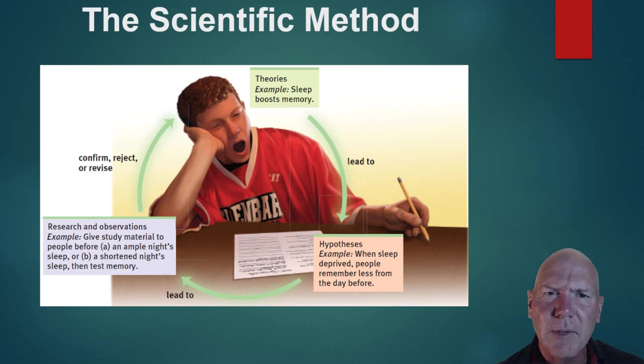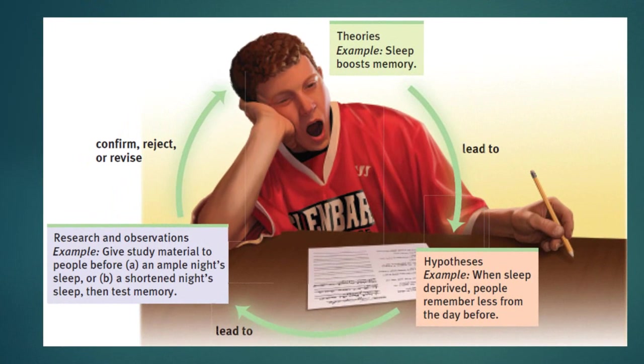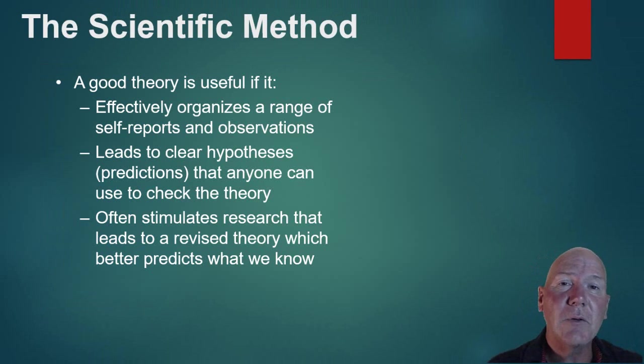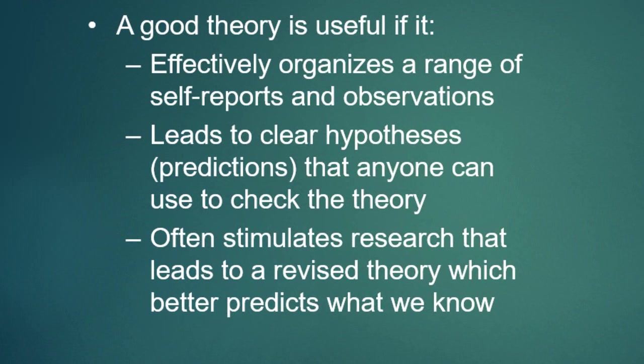So it's kind of a big, long circle. There are theories. Then we create hypothesis. Then we do research and observations. And then we revise our theories. And then we create more hypothesis and so on and so on. It really never ends. In scientific methods, we never really say anything is really proven if it's done through this kind of research. We just refine theories to the point where we almost accept them as fact, like numbers and those kinds of things. So a good theory is quite useful if it organizes a range of self-reports and observations. And it can lead to a clear hypothesis that anybody can use to check the theory. Remember the hypothesis, again, is the if and then statement. You can look at a hypothesis and you'll know exactly how that research will be conducted. And it often stimulates research. It leads to a revised theory, which better predicts what we know. So we're increasing our knowledge every time we do this kind of research.